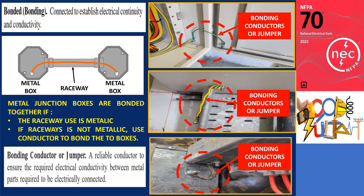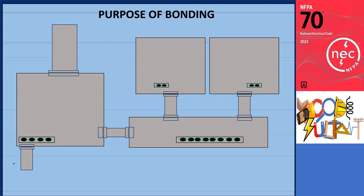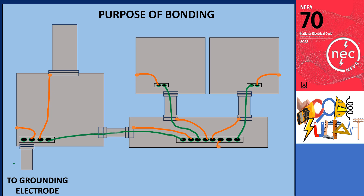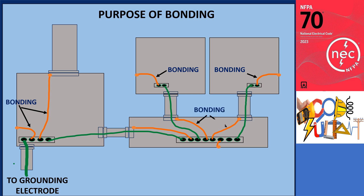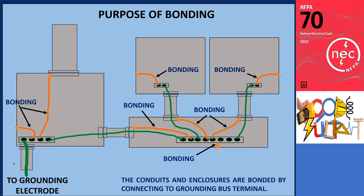It's important to remember that bonding two pieces of equipment together does not automatically mean that both pieces are grounded. In another illustration, we can see conduits and enclosures that are bonded by connecting them to a grounding bus terminal. The purpose of bonding is to connect two or more conductive objects together in order to ensure the electrical continuity of the ground fault current path. This provides the capacity and ability to safely conduct any fault current that may be imposed and minimizes voltage differences between conductive components.